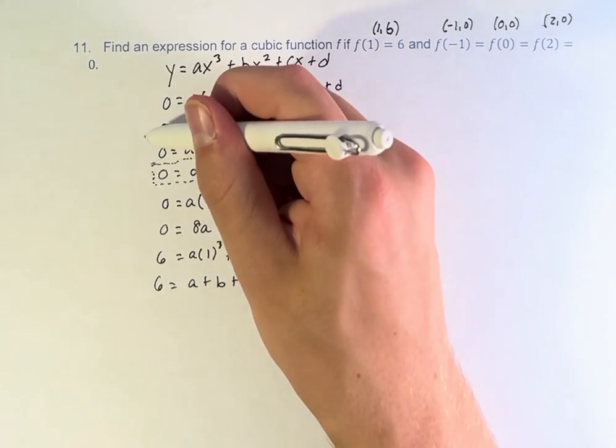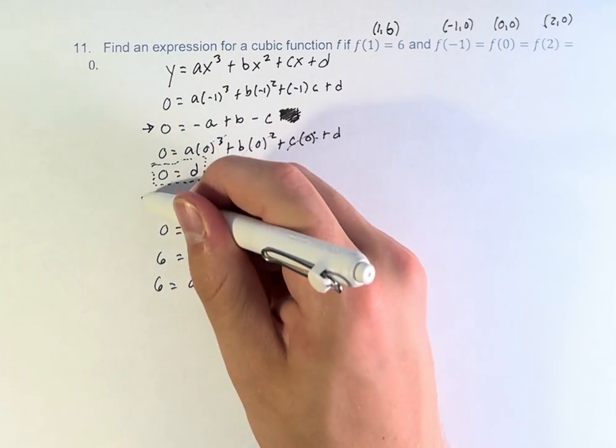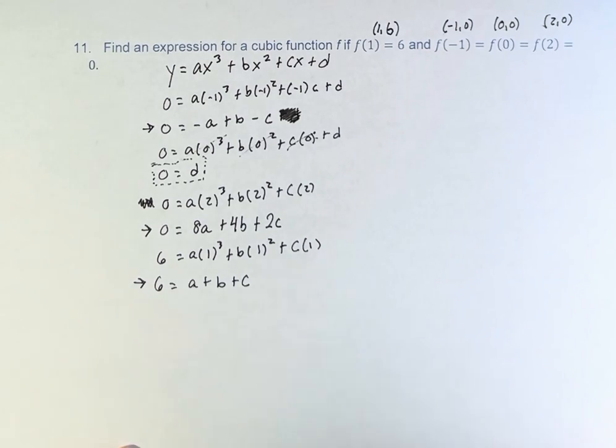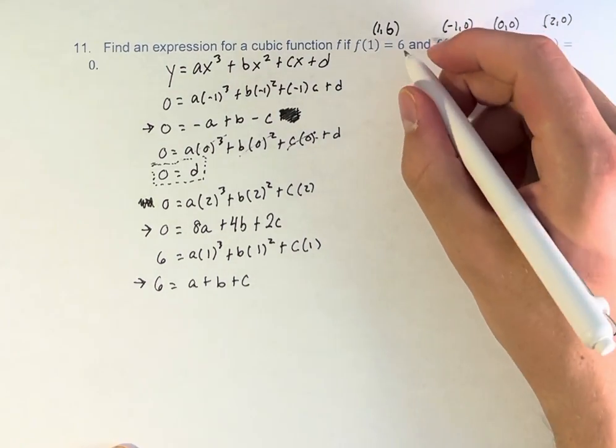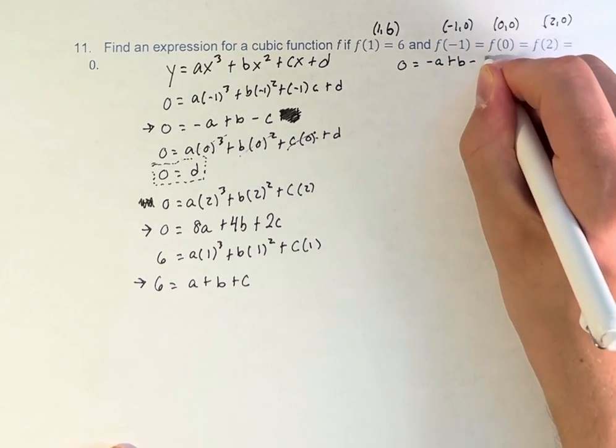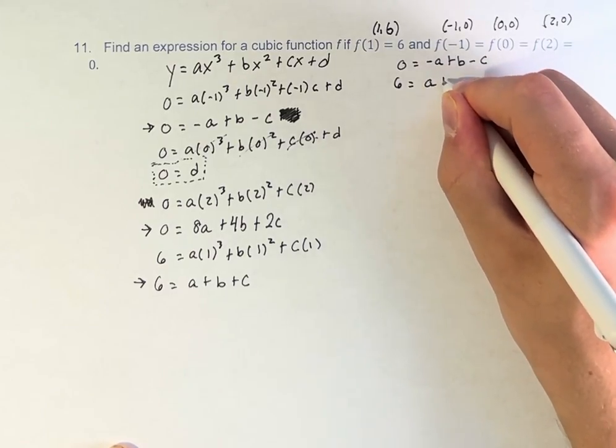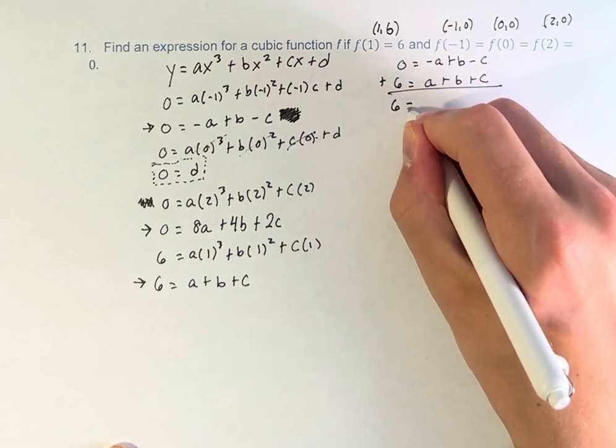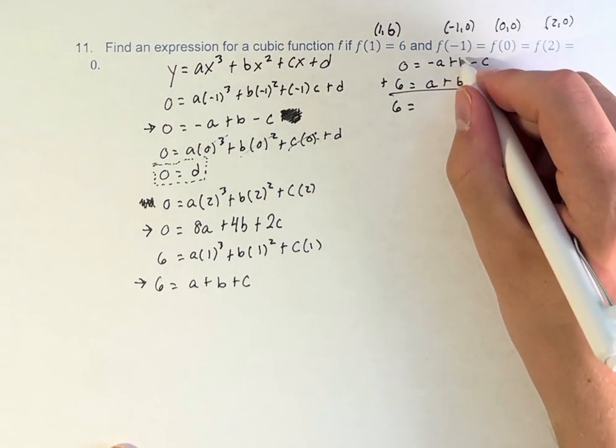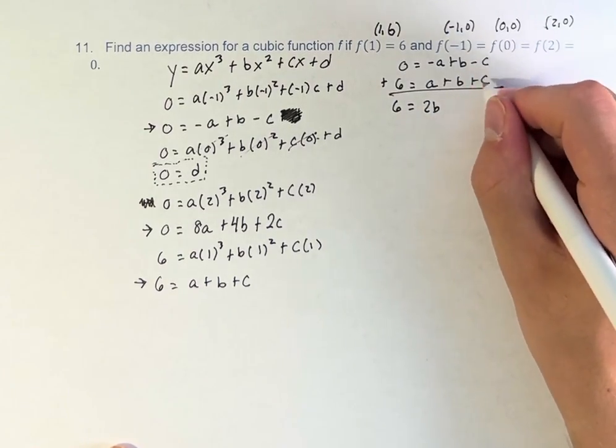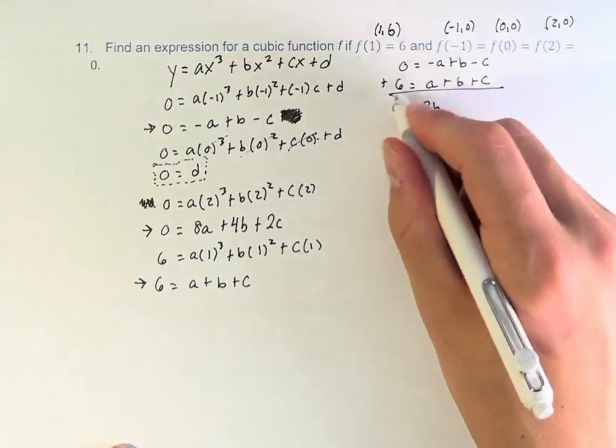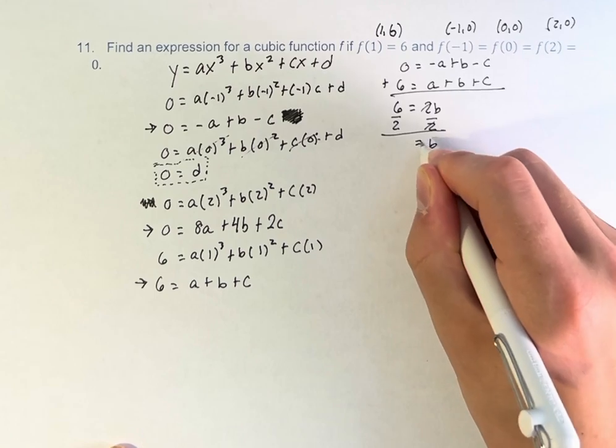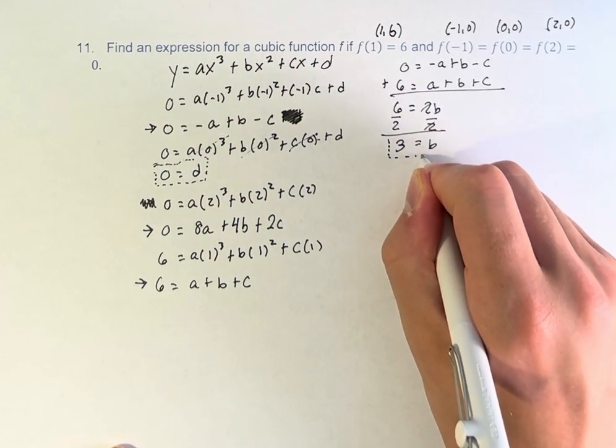So we now have three equations. And now, we can solve for our variables. Let's do 0 is equal to negative a plus b minus c, and 6 is equal to a plus b plus c. Let's add these two up. 0 plus 6 is 6. Negative a plus a is 0, so those cancel. b plus b is 2b, plus negative c plus c is another 0. So the a's and c's cancel. We're just left with 6 is equal to 2b. If we divide both sides by 2, b is equal to 3. So now we have two of our four constants.